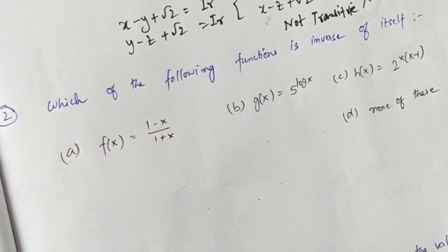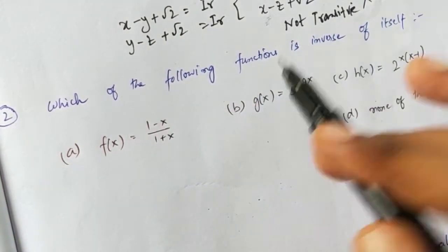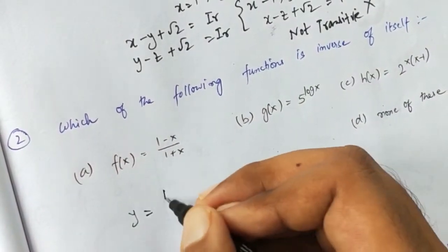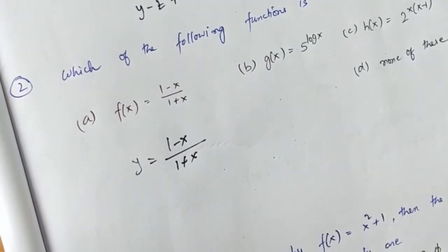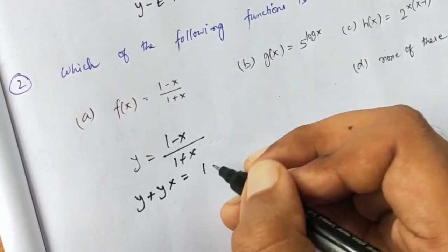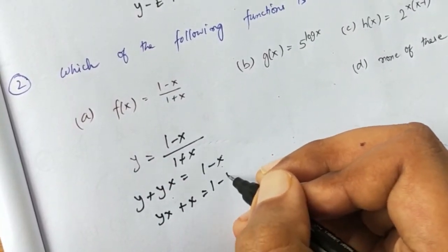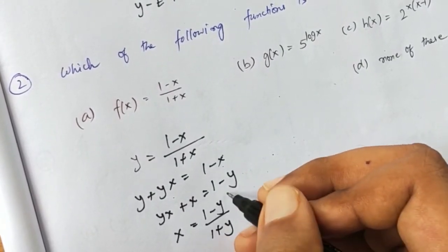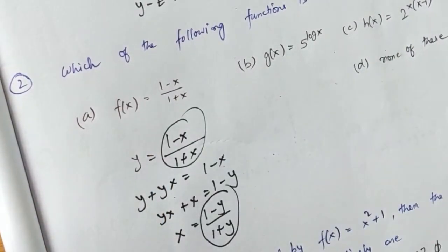Coming to the second problem, there is a function given and you have to find the function whose inverse is itself. To find an inverse, we take y equal to (1 minus x) divided by (1 plus x). Cross-multiplying gives y plus yx equal to 1 minus x; keeping x on one side: yx plus x equals 1 minus y, so x equals (1 minus y) divided by (1 plus y), which is exactly the original function. Therefore option A is a function that is its own inverse.